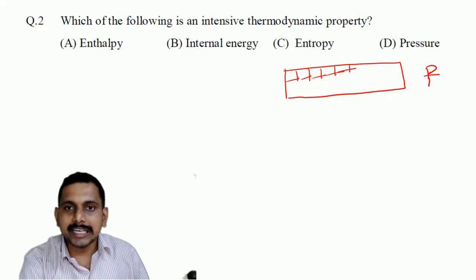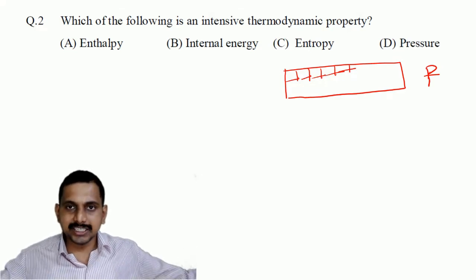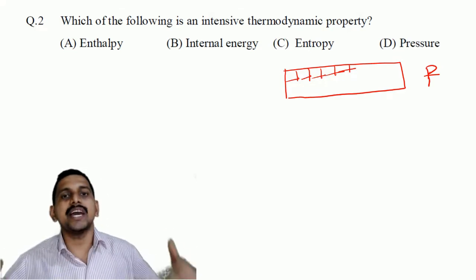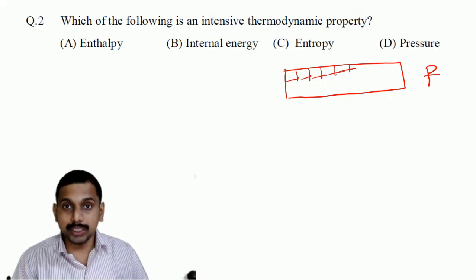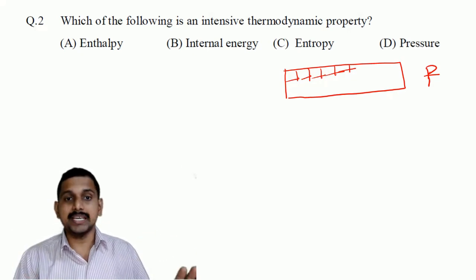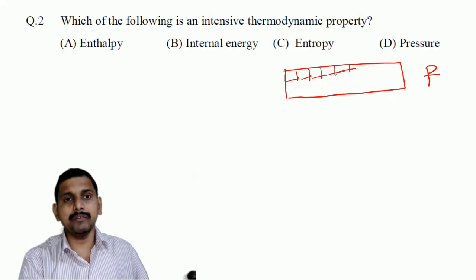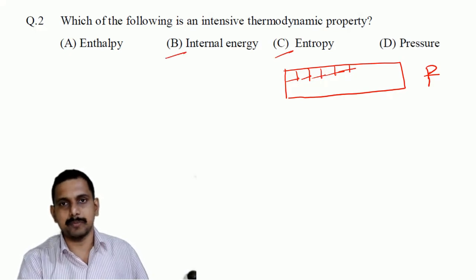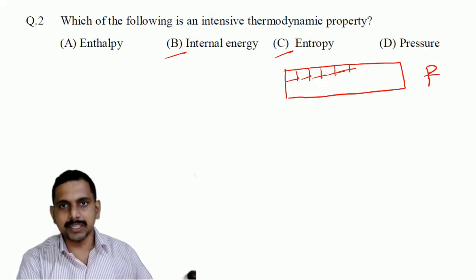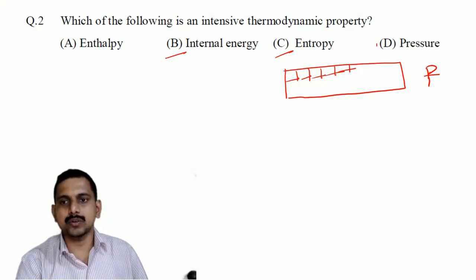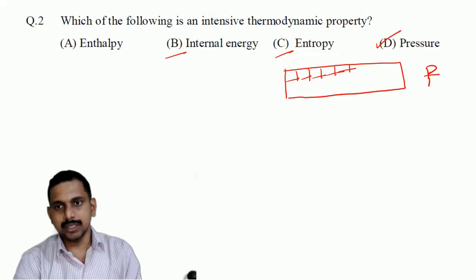Enthalpy is not an intensive property — as the extent increases, enthalpy increases. Enthalpy per unit mass is intensive. Similarly, internal energy and entropy are extensive properties, but specific entropy and specific internal energy are intensive properties. So the answer is only pressure — the answer is D.